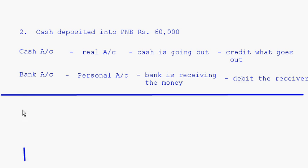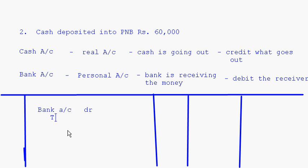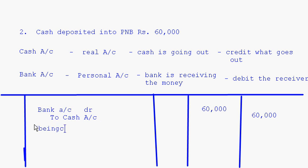All transactions will be given together and you make one journal format, keeping entries one below the other. In the particulars column: Bank Account Debit, To Cash Account. Bank account is debited with 60,000 and cash account is credited with 60,000. Narration: 'Being cash deposited in PNB.'